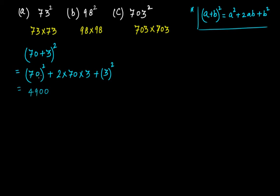And this becomes 2 times 3 is 6, times 70 is 420, and this is 9. Now you can quickly add them: 4900 plus 420 plus 9.